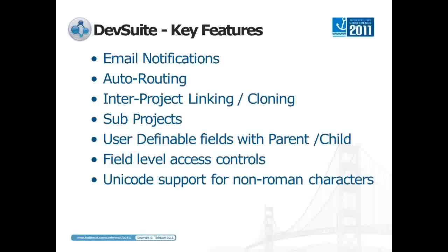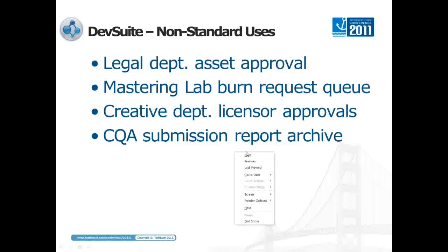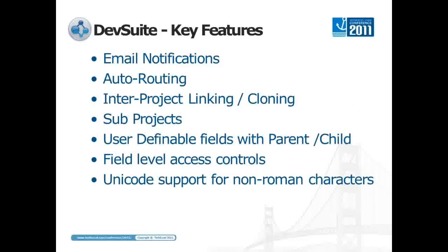The next feature is inter-project linking and cloning, which we've used a lot. We have a lot of projects like large Pixar movie games where you're working on seven or eight platforms simultaneously, often developed by totally different developers. A lot of times the bugs occurring are actually the same from project to project and platform to platform. DevTrack allows you to create links between bugs even if they aren't in the same DevTrack project, so you can quickly switch between bugs in different projects and keep tabs on a particular bug that might exist across multiple different platforms simultaneously.